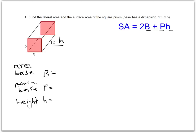It's important to remember that B and P are both going to be values based on the base of your prism. And then the H is going to be that separate value, the vertical height between the two bases.